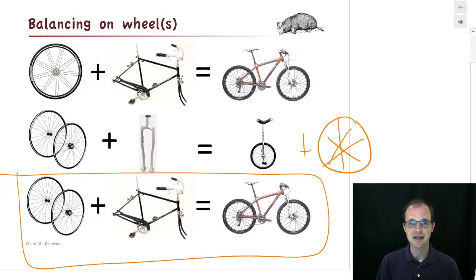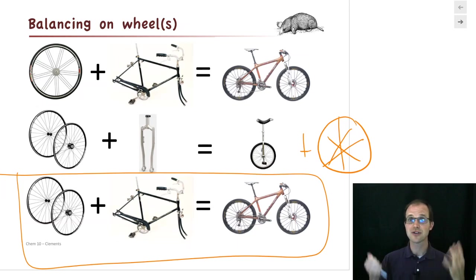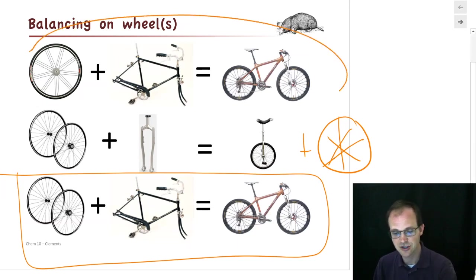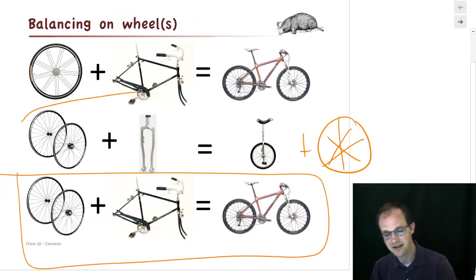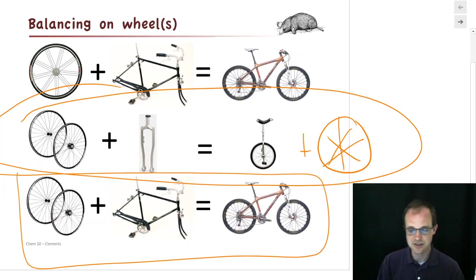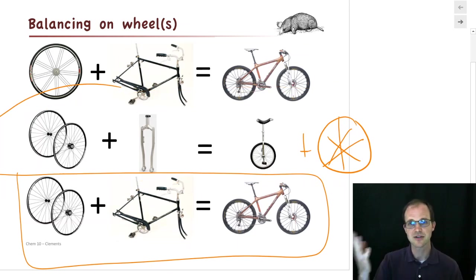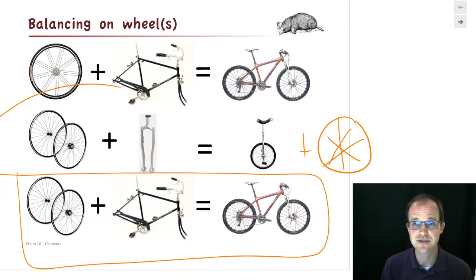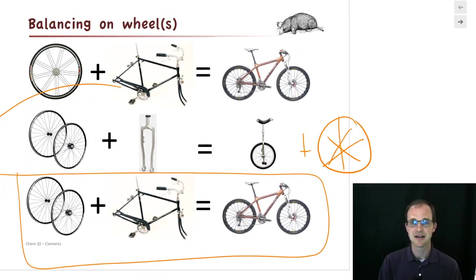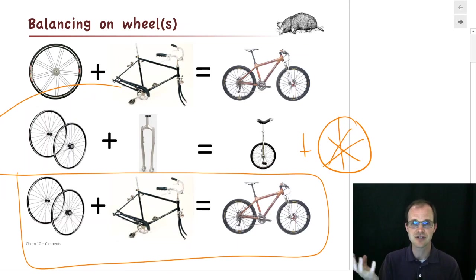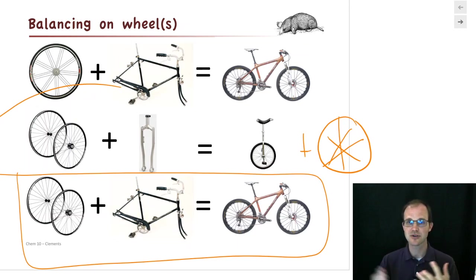We're going to do the exact same thing for chemistry. Whenever we write a chemical reaction — whenever we say this reacts with this to make these other things — we want to make sure we're not creating or destroying anything. If we had two wheels to begin with, we need two wheels at the end. Our wheels in chemistry are our atoms. We must have the same number of atoms at the beginning as at the end.